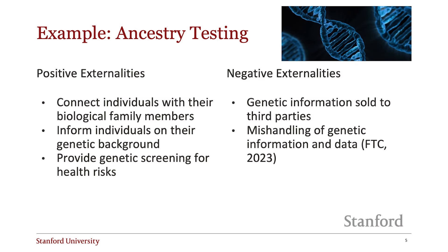Sometimes technology can have both positive and negative externalities, and sometimes it's a little less clear whether the externality is positive or negative. Let's take a look at an example. AncestryDNA, 23andMe, and a variety of other services provide ancestry testing by using genetic data to estimate the geographic origins of a person's ancestors.